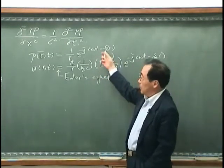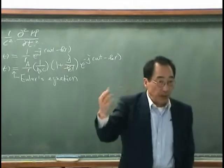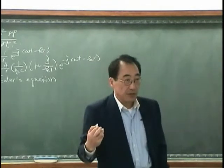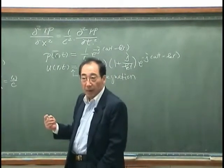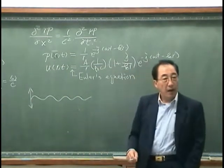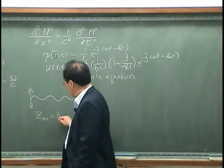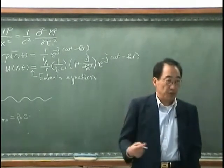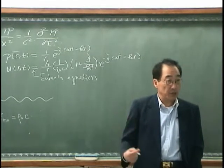If we compare this pressure and this velocity in terms of phase, we see that the pressure and velocity have a phase difference. This is because, as we saw for the infinite string case, the driving point impedance of the infinite string was rho_0 c, and pressure and velocity had the same phase — the driving point impedance has only a real part.